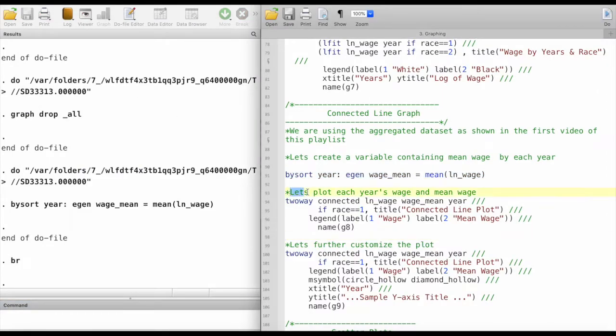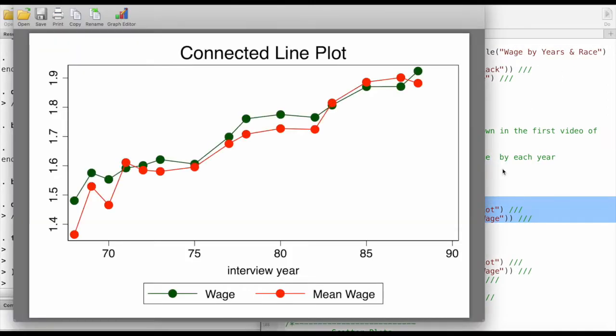Now let's plot each year's wage and mean wage. I'll be using this code, and we can see that we have a pretty nice and neat connected line plot where the green color gives us the observations of the wages and the red color gives us the mean wages for that given year.